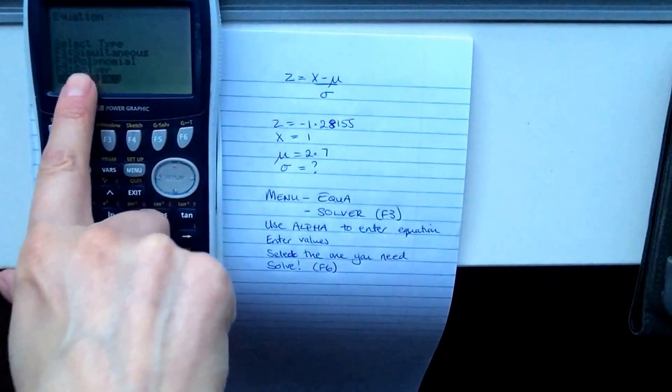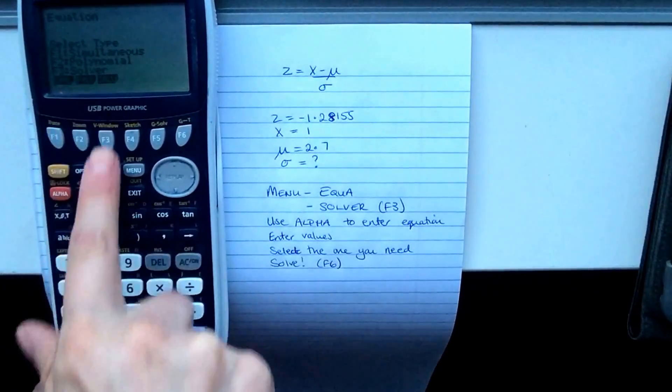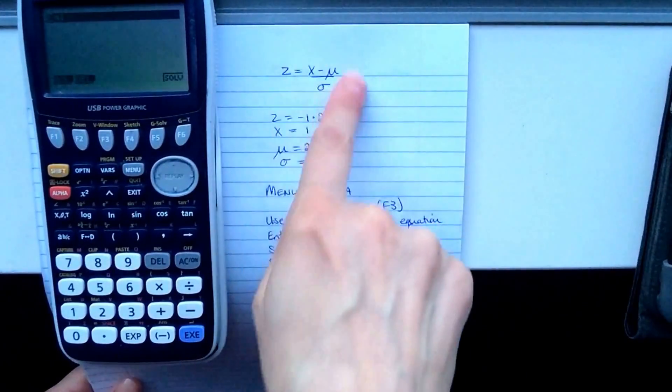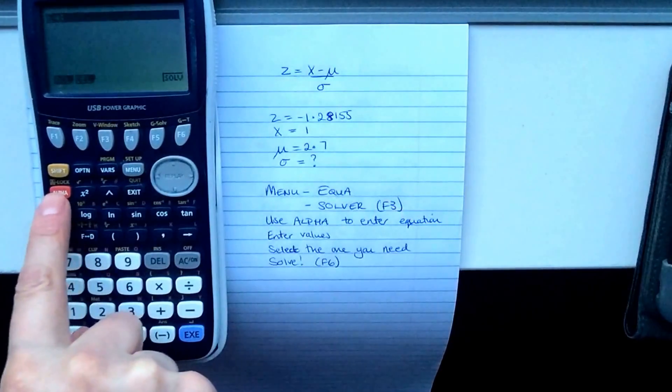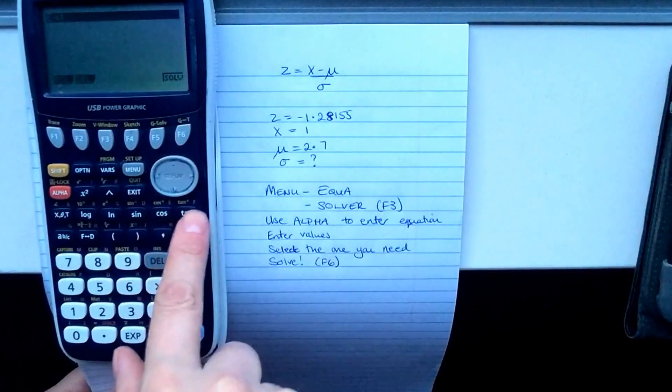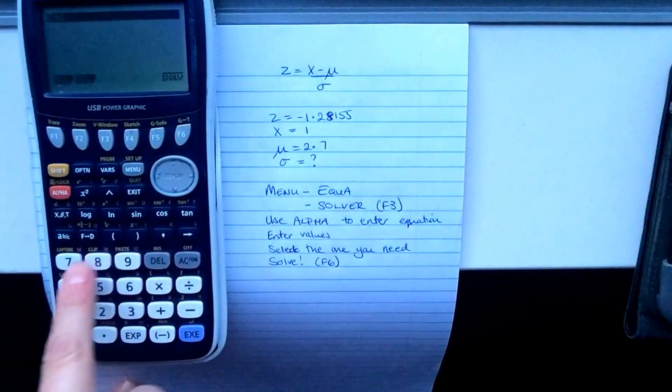We are going to use this solver function here, so you press F3. First of all, we have to put in the equation, so we have to find a way to type this in. You use the alpha keys to select these letters, and those letters are written at the top of your keys here in red.